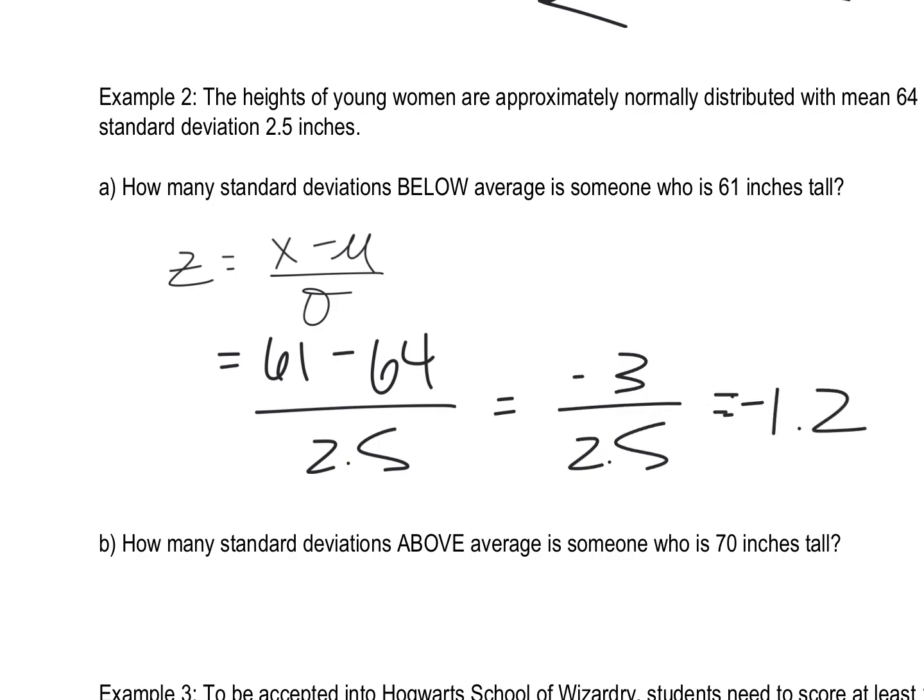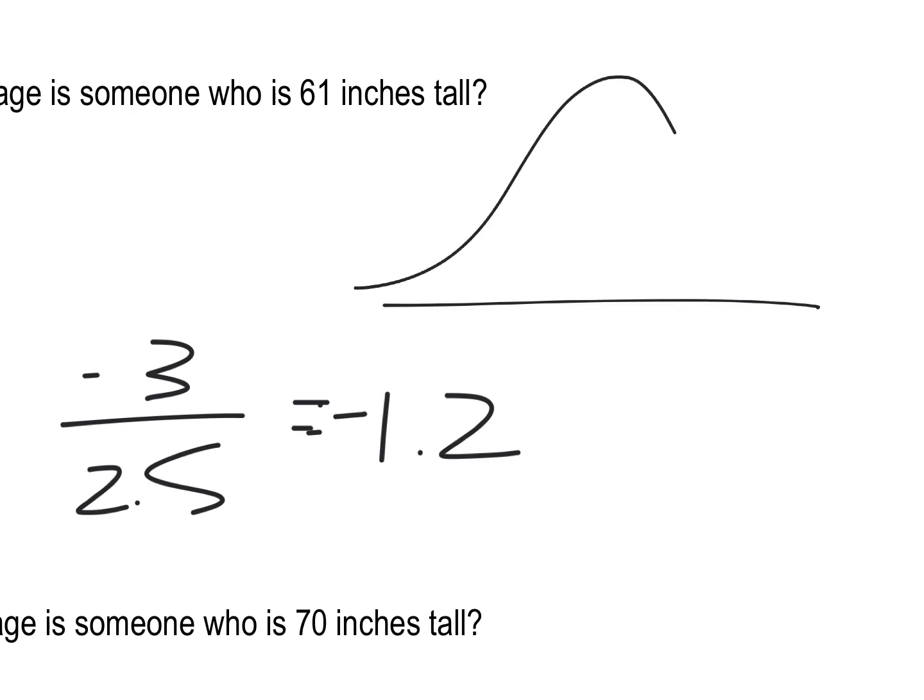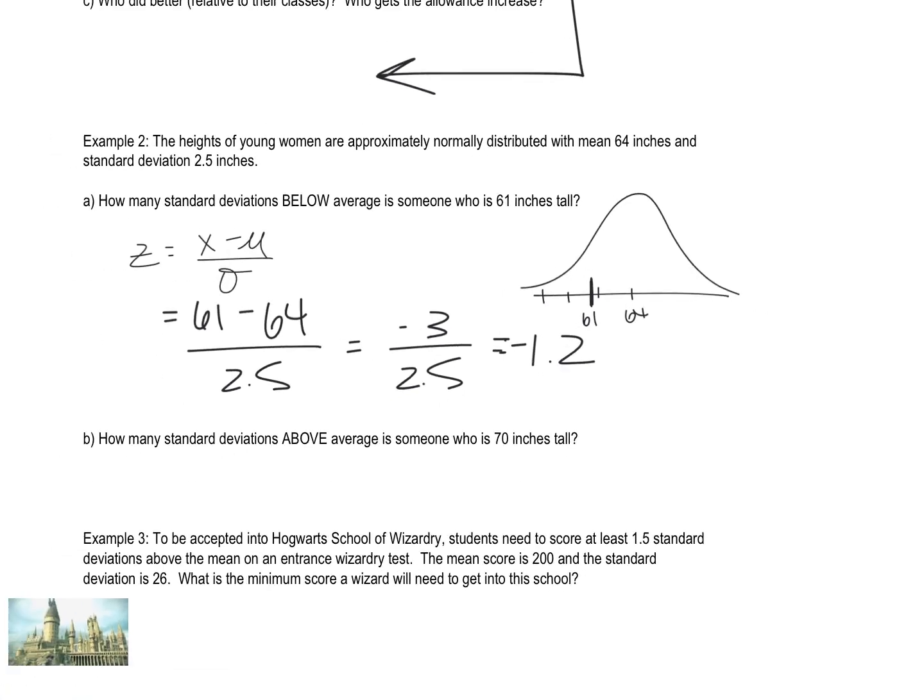Equals negative 1.2. So negative 1.2, remember that's because this person is below average, that's why they have a negative Z-score. And so keep in mind what that tells us is on the bell curve with a mean of 64 right here, we're going 1.2, so a little bit beyond one standard deviation below, that's where the 61 falls. Okay, so 1.2 standard deviations below the mean.